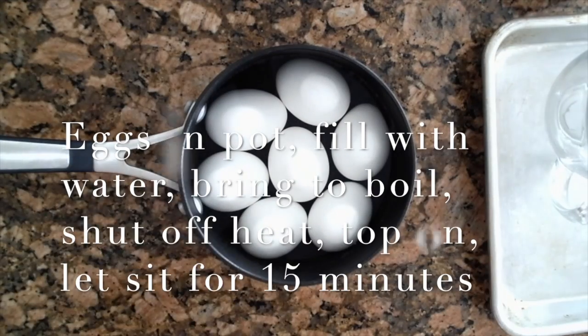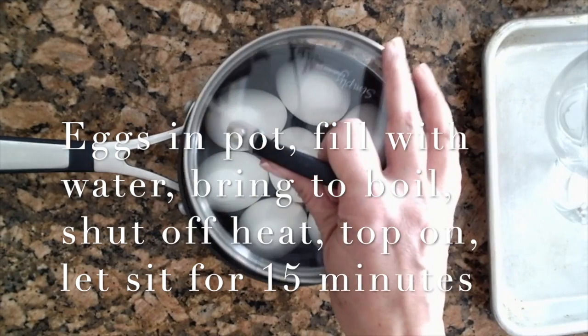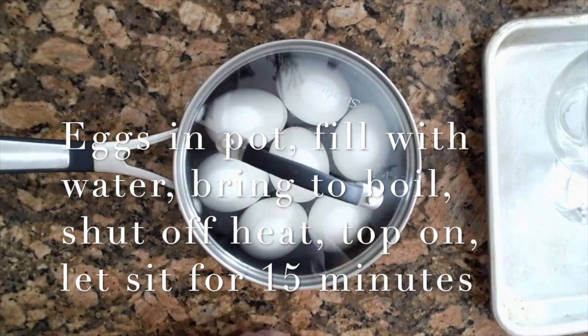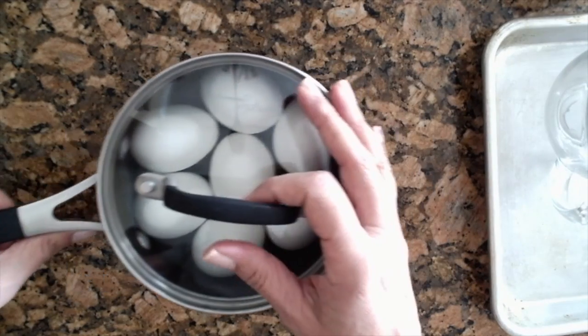One more time: line your eggs, fill it up, put it on the stove, turn it on, bring it to a boil. When it boils, shut off the heat, put the top on, set your timer for 15 minutes. When it's done, take it off, pour it out, cool off your eggs, and they'll be ready to color.